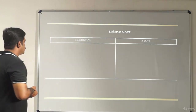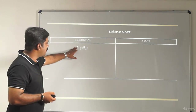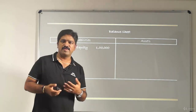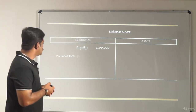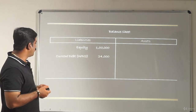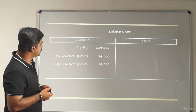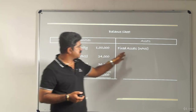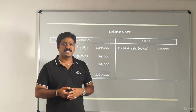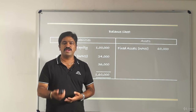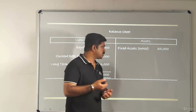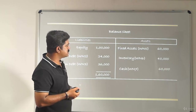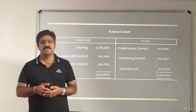Now we prepare the balance sheet. On the liabilities side: owner's equity is 100,000; current debt is 24,000; long-term debt is 36,000; total liabilities are 160,000. On the assets side: fixed assets are 60,000; inventory is 40,000; cash or other current assets are 60,000; total assets are 160,000.